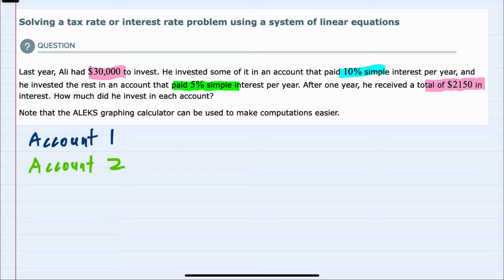So we have these two accounts, account 1 and account 2. And I don't know how much is in either of these accounts. So I'm going to call one of them X and the other Y. And knowing that the total amount was $30,000, I can say that X plus Y equals $30,000.